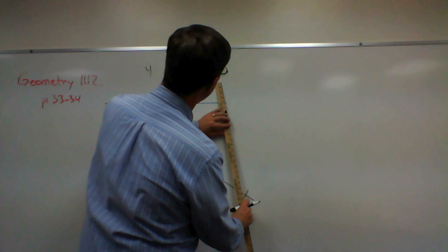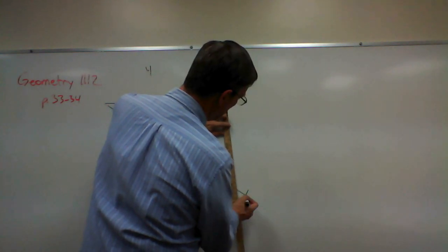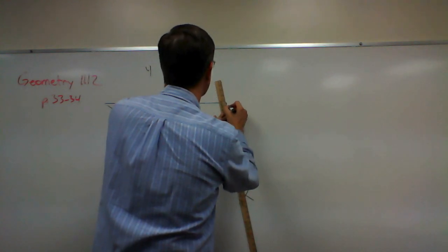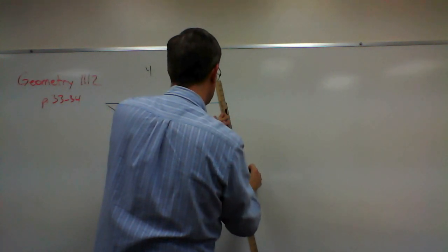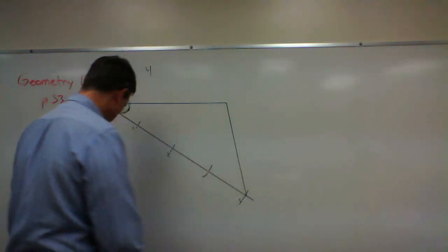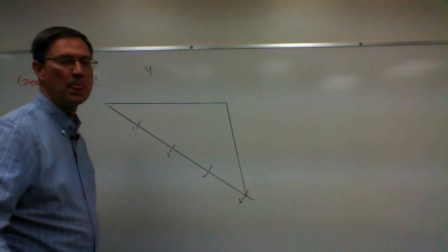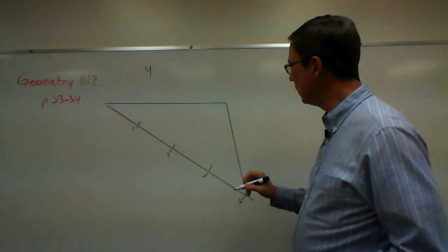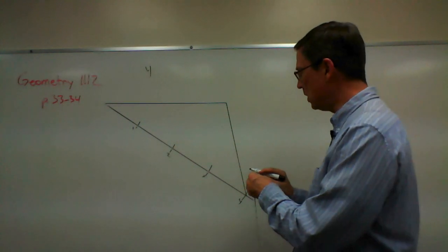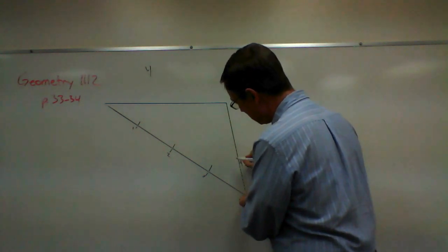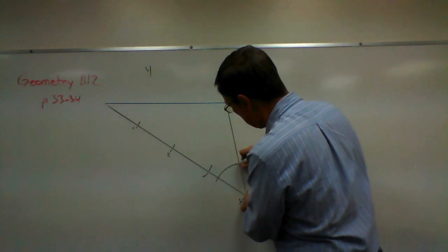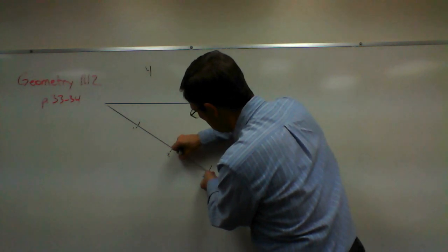So the next step now is take the end point and this mark here that I have for number four, and we're going to connect those points. Now the key is we're going to start here and work our way up and sweep an arc that intersects both of these.